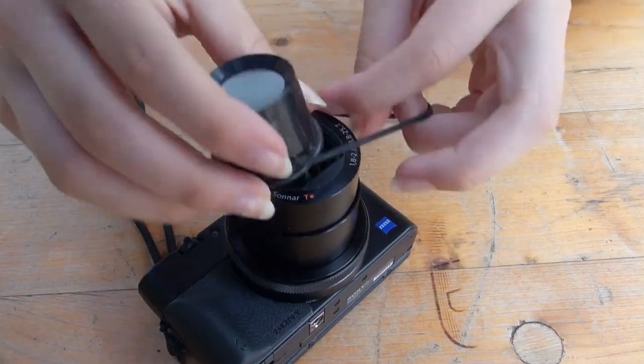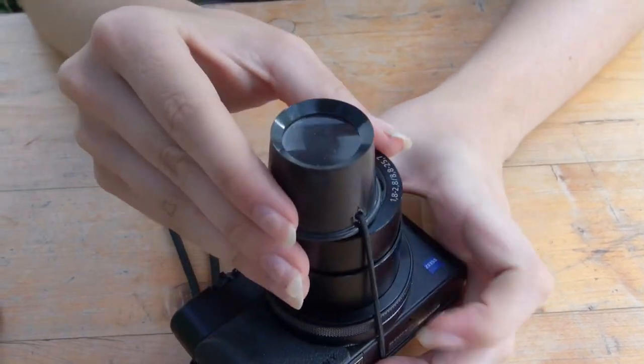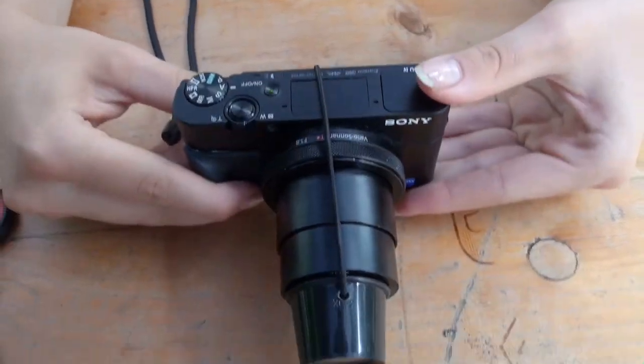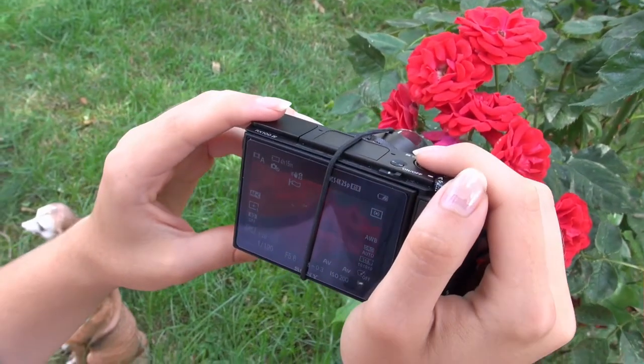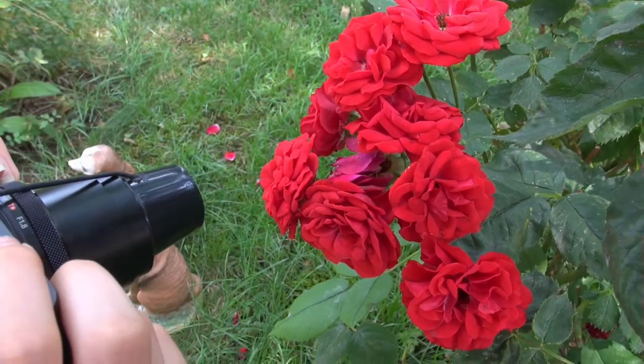Strip your new macro lens over the camera now. Here we go, your macro lens for your Sony RX100 camera is ready now, ready to shoot.